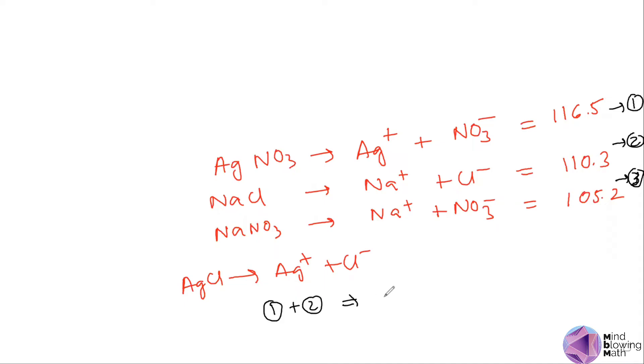If we do equation 1 plus equation 2 minus equation 3, we get: Ag+ plus NO3- plus Na+ plus Cl- minus Na+ minus NO3-. The NO3- cancels and Na+ cancels, leaving finally Ag+ and Cl-.